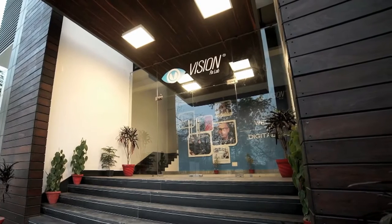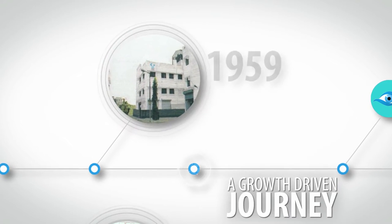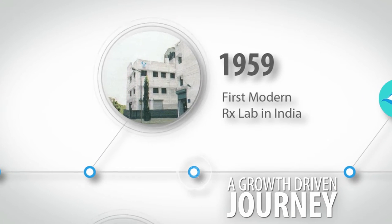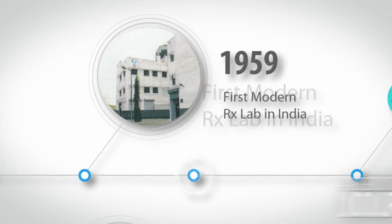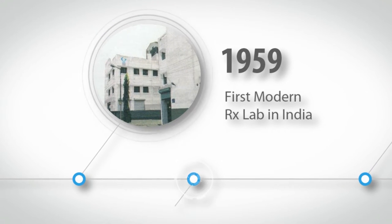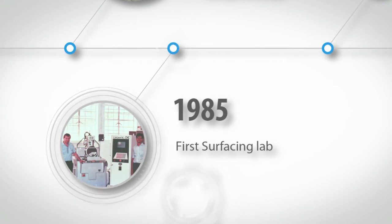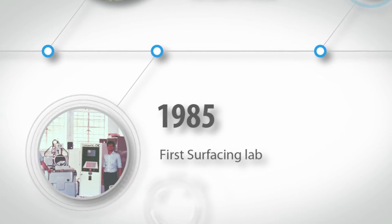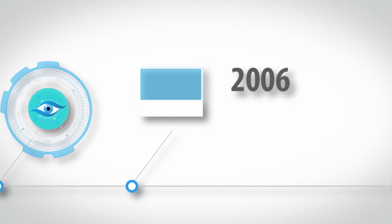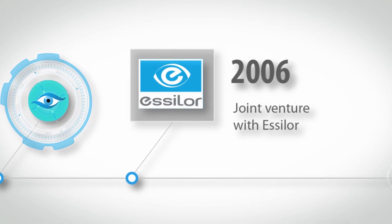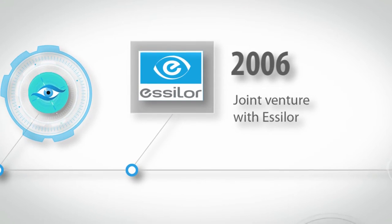The journey began in the year 1959 with setting up the first lens manufacturing plant in India. Its first surfacing lab commenced operations in 1985. It reached a new milestone in 2006 as it entered into a joint venture with Essilor.